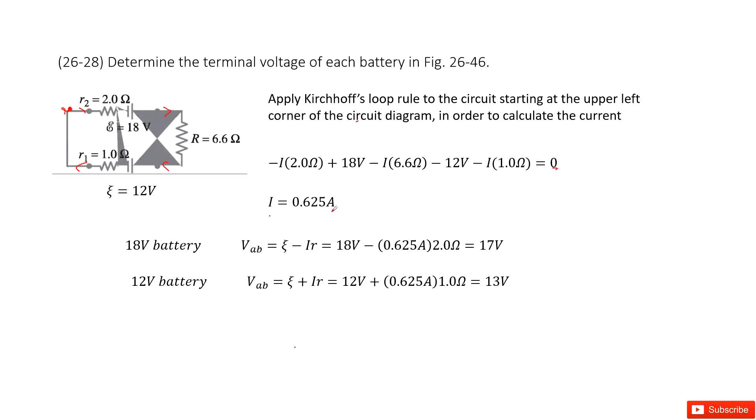Now we can determine the external voltages for each battery. For this one, it's very straightforward. We can just use the EMF minus the current times R, and we get 17 volts.